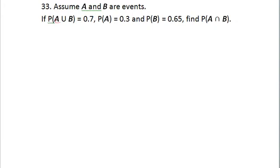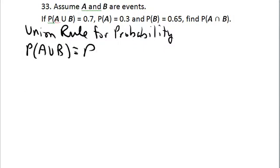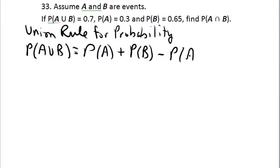Here you need the union rule for probability, which says the probability of A union B equals the probability of A plus the probability of B minus the probability of A intersect B.